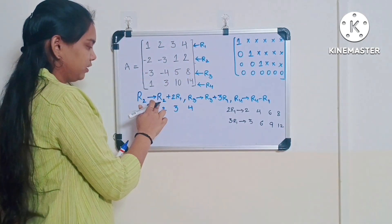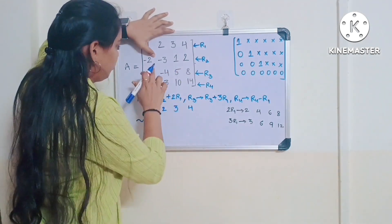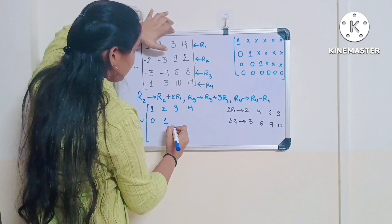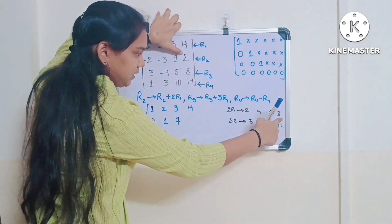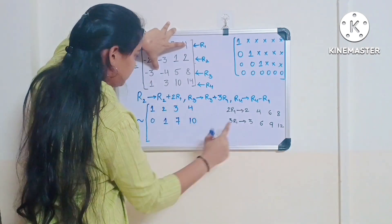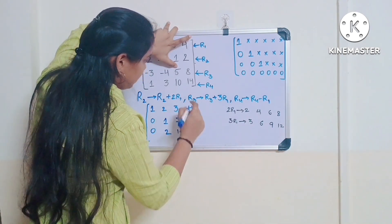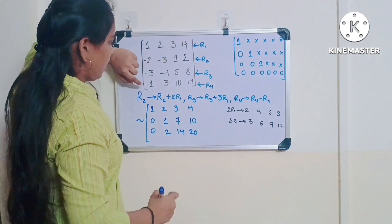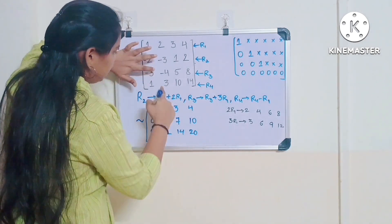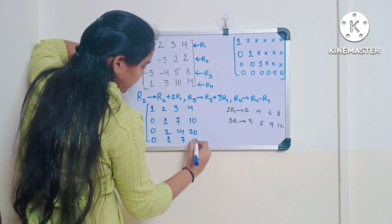Applying R2 → R2 + 2×R1: minus 2 plus 2 gives 0; minus 3 plus 4 gives 1; 1 plus 6 gives 7; 2 plus 8 gives 10. For R3 → R3 + 3×R1: minus 3 plus 3 gives 0; minus 4 plus 6 gives 2; 5 plus 9 gives 14; 8 plus 12 gives 20. For R4 → R4 − R1: 1 minus 1 gives 0; 3 minus 2 gives 1; 10 minus 3 gives 7; 14 minus 4 gives 10.